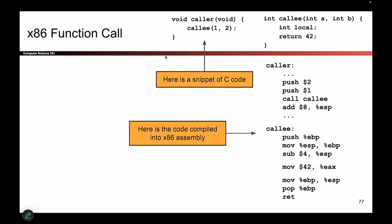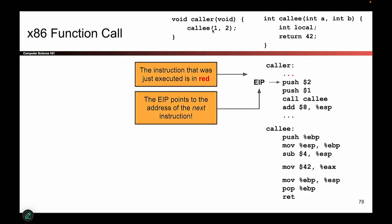So here we go. Up here at the very top, we have a piece of C code that someone wrote. And over here on the right, we have that exact same code compiled into x86 assembly — the compiler took this code and spit out this corresponding assembly. We're going to run through this one by one to see exactly what happens when the caller function calls the callee function. Along the way, we'll use this EIP arrow to show us what instruction is executing.